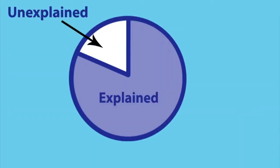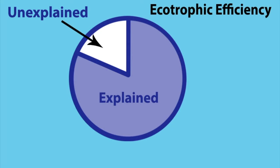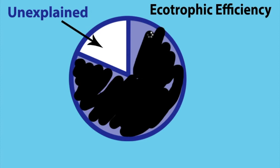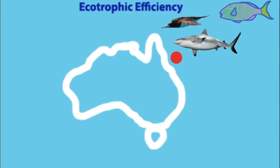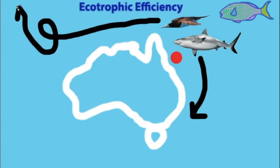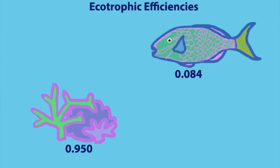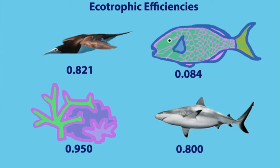Finally, ecotrophic efficiency is the proportion of production that is explained by the ecosystem model. This parameter is equal to other mortality — or death from causes not accounted for in our model, like disease — as well as migration and lack of predation on top predators. In other words, we need this parameter to balance our ecosystem equations, because we can't measure everything. Top predators that are less preyed upon will have a lower ecotrophic efficiency than species further down the food chain, and migrating animals like birds will have a lower ecotrophic efficiency than corals, which spend their whole life in one place. This is because the production of these groups is not totally consumed within the modelled area.